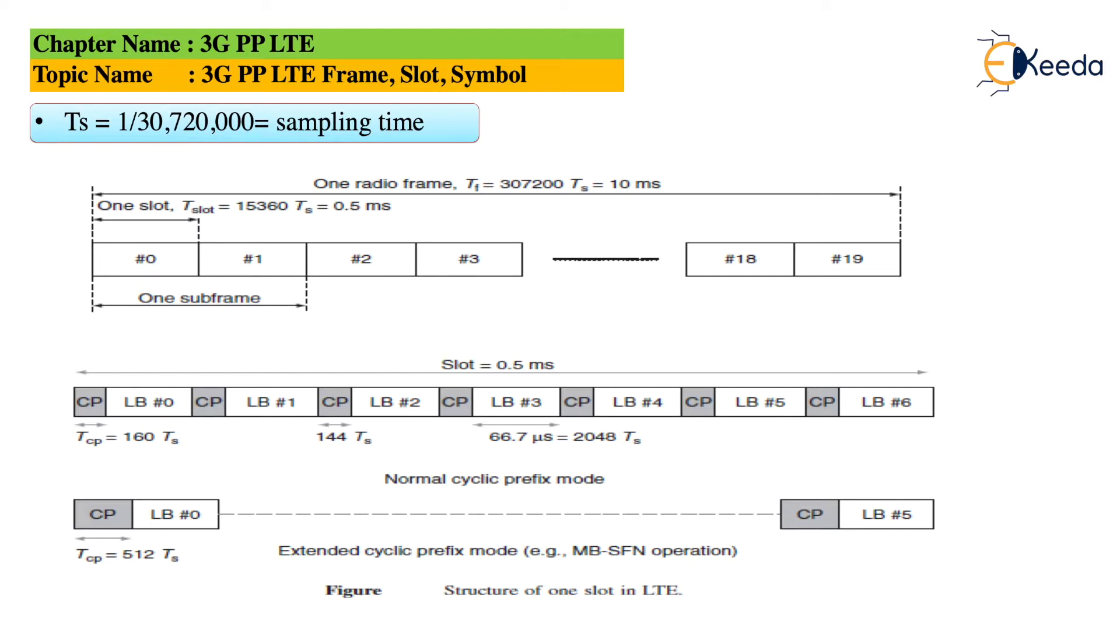So we have 6 different symbols up to LB hash 6. We have 6 different symbols over here that have been transmitting in one slot.